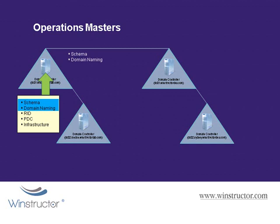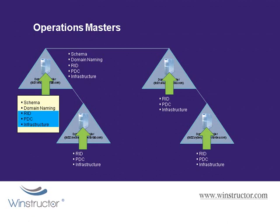The first two roles — the schema and the domain naming role — are referred to as forest roles, meaning there will only ever be one machine holding that role in your entire forest. The remaining three roles — the RID, PDC, and infrastructure roles — are domain roles, meaning one server holds these three operations roles in each domain. In a forest with four domains, every domain controller will hold at least three roles: the RID, PDC, and infrastructure roles, with only the first server holding all five. These roles can be transferred to other servers.